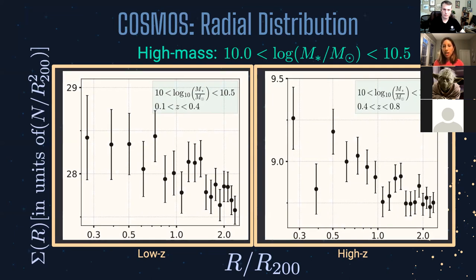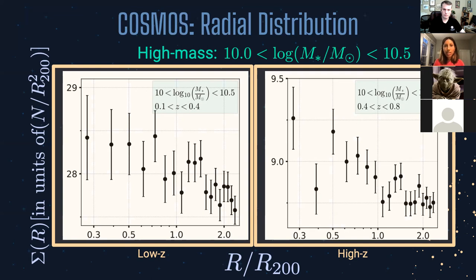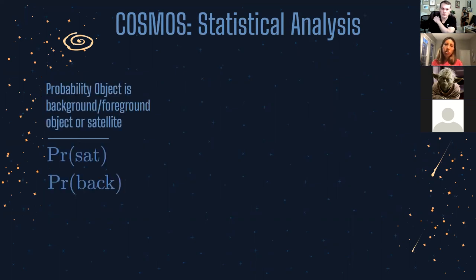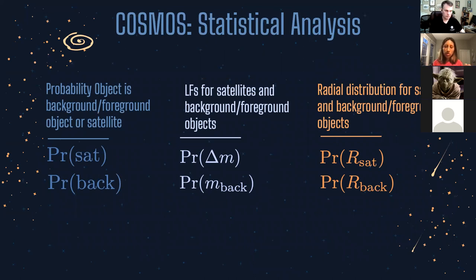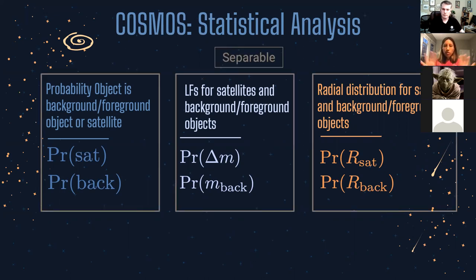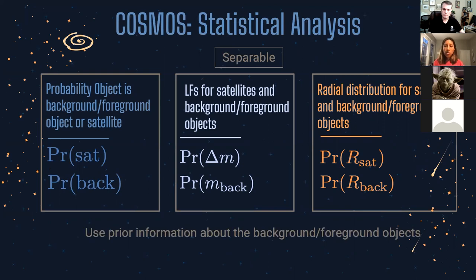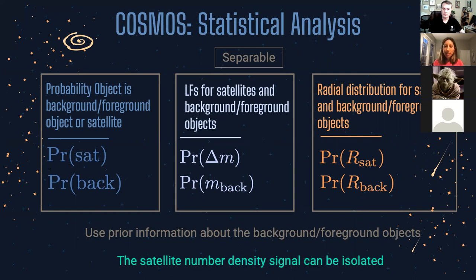To model this, we infer each population's properties while taking into account the properties of each host galaxy. We inferred three different properties using a Bayesian statistical model: first, the probability that an object is a background object or a satellite; second, the probability of the luminosity functions for satellites and background objects. Assuming these properties were separable and using prior information about background and foreground objects, we were then able to isolate the satellite number density signal, which we used to create our satellite luminosity functions.